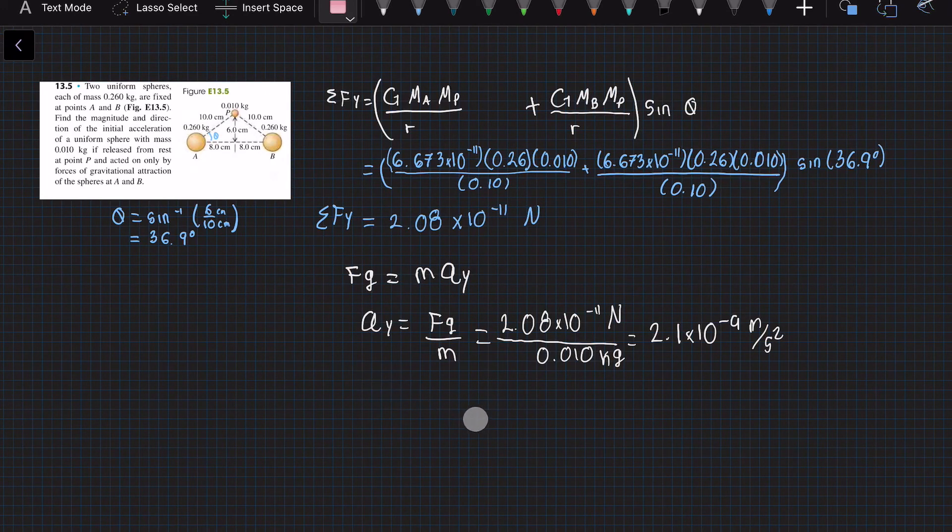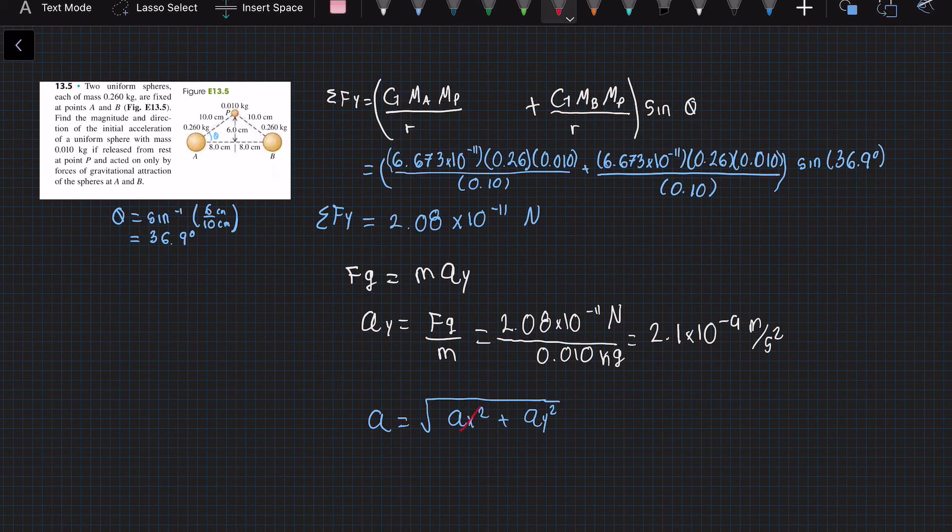The acceleration in the x direction, well there's actually none. So to find the magnitude of this, we will do the square root of both accelerations, but since the acceleration in the x direction is zero, the magnitude of the acceleration will be the same, which is 2.1 times 10 to the negative 9 meters per second squared.